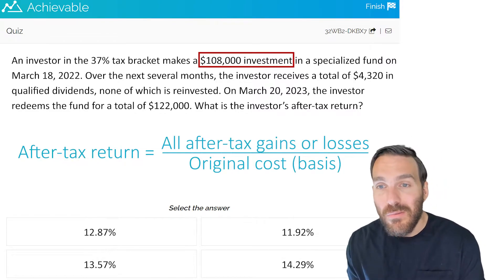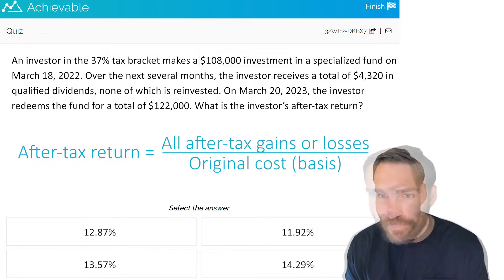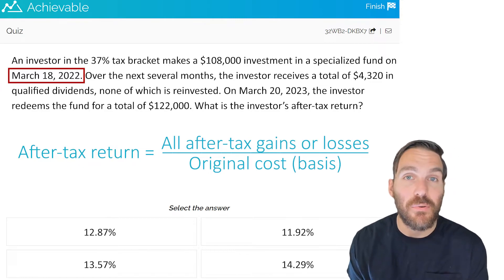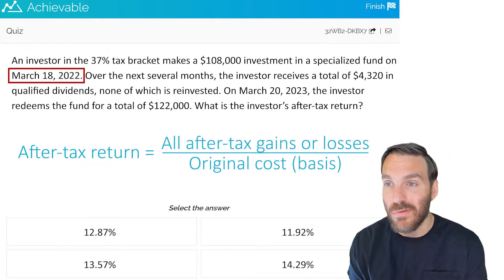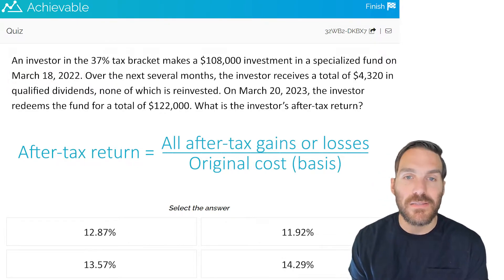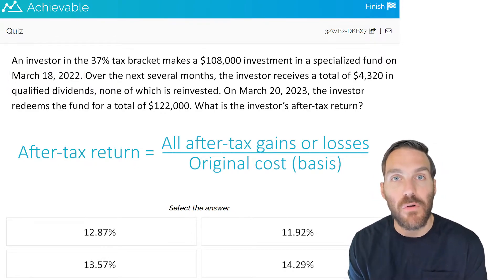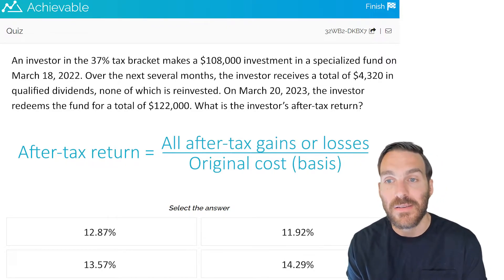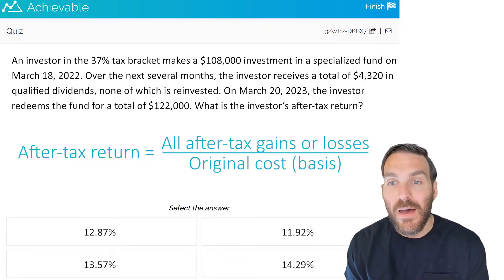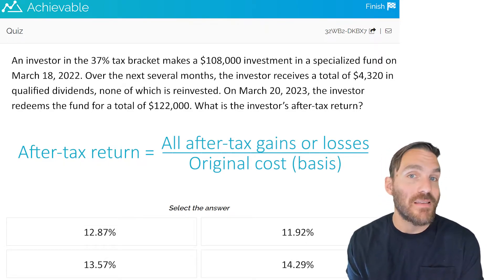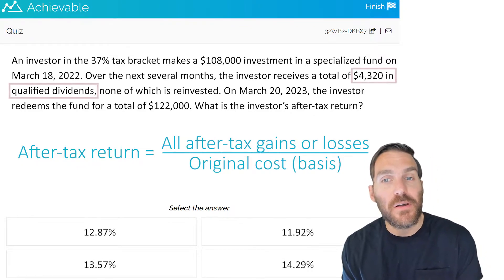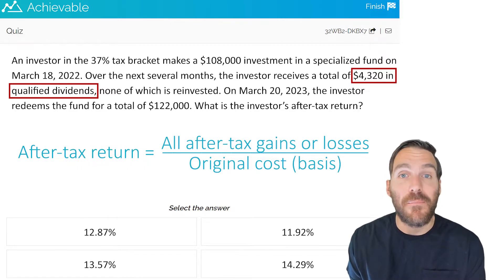The investment was made on March 18th, 2022 — that date will be important and we'll see why as we go through the rest of the question. Moving to the second sentence: over the next several months, the investor receives a total of $4,320 in qualified dividends, none of which is reinvested. Again, if they had reinvested those dividends back into the fund, that would have added to the basis.